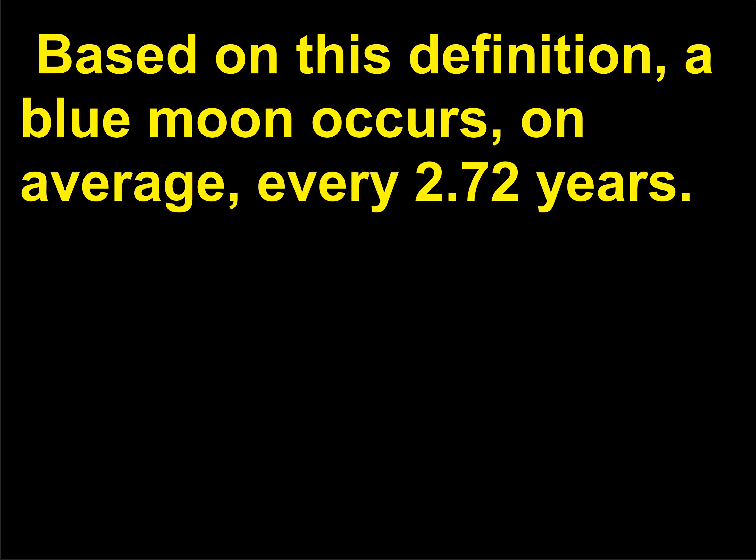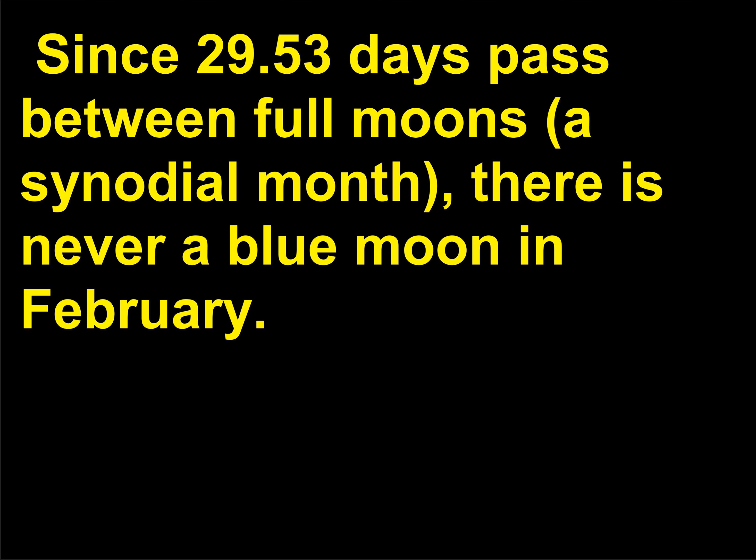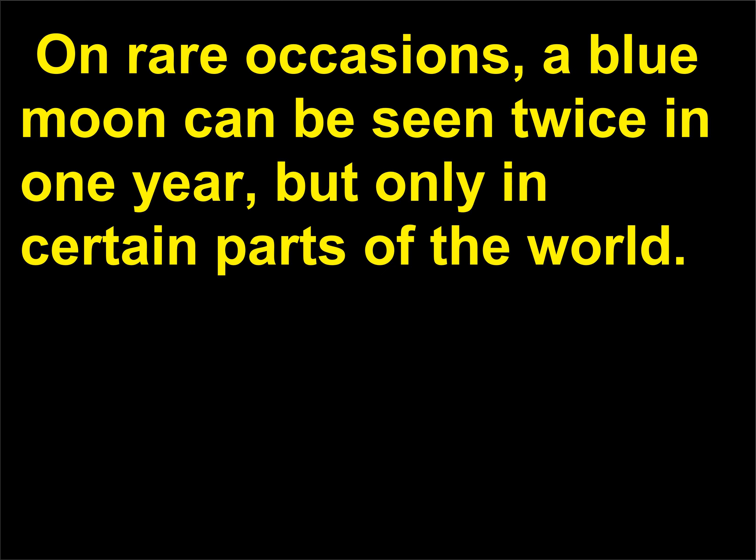Based on this definition, a blue moon occurs, on average, every 2.72 years. Since 29.53 days pass between full moons, a synodic month, there is never a blue moon in February. On rare occasions, a blue moon can be seen twice in one year, but only in certain parts of the world. Blue moons will next occur August 31, 2012; July 31, 2015; January 31, 2018; March 31, 2018; October 31, 2020; August 31, 2023; May 31, 2026; December 31, 2028; September 30, 2031; July 31, 2034.